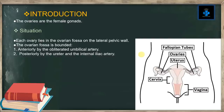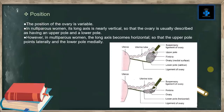Situation: each ovary lies in the ovarian fossa on the lateral pelvic wall. The ovarian fossa is bounded anteriorly by the obliterated umbilical artery, and posteriorly by the ureter and the internal iliac artery.